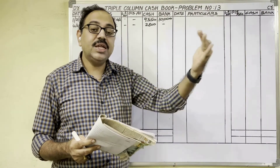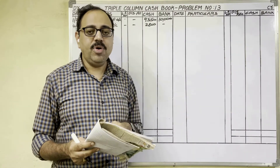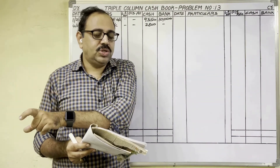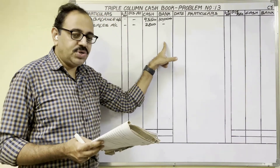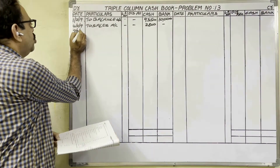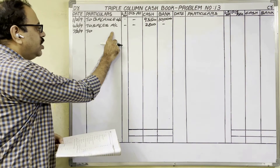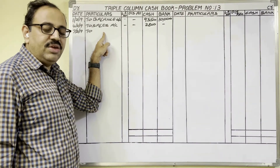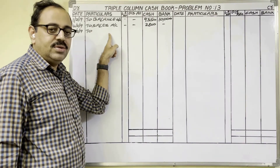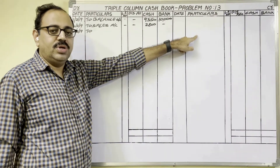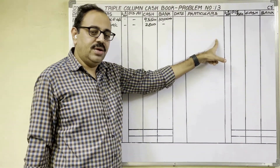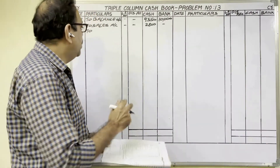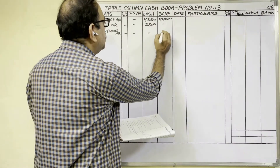Sold furniture and received amount through Google Pay — the firm is selling furniture so cash should come in, meaning it is a receipt transaction, and the buyer paid through Google Pay so money is deposited directly in our account. Bank balance is increasing, so write debit side bank column. The doubt is whether to write 'To Sales' or 'To Furniture' — always remember, if goods are sold write 'To Sales'; if a fixed asset is sold, write that asset name. Same rule applies for purchases. Here the fixed asset is furniture, so write 'To Furniture Account.' Amount in bank column.